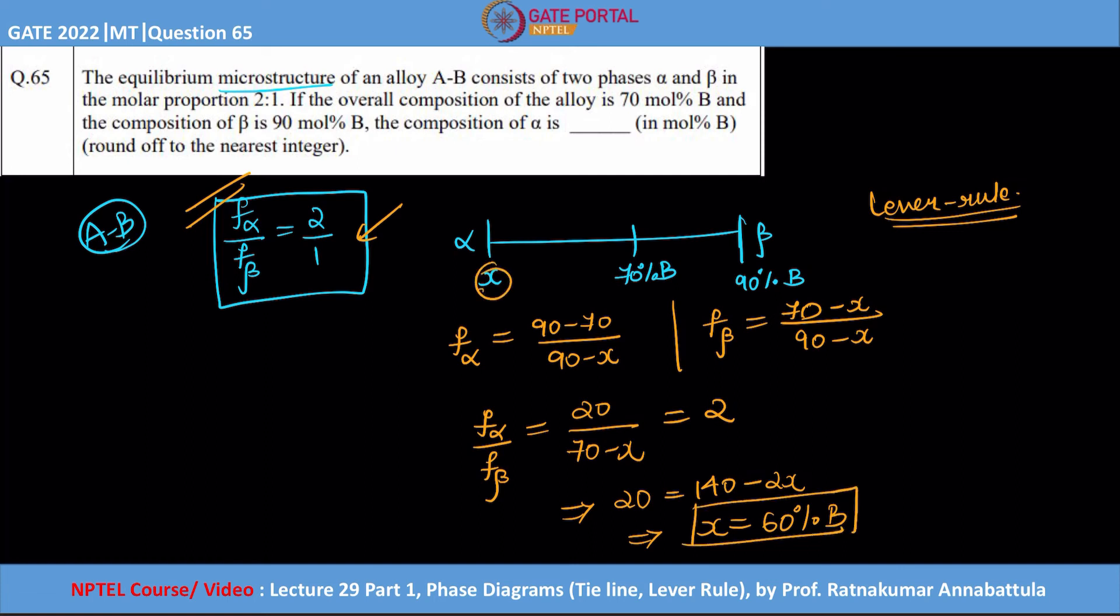This value is 60. What we basically did is we started by assuming that alpha has some x percentage of B in it, and then from the given relation we tried to correlate F_alpha and F_beta and calculated our assumed value of x. This is basically done with the help of the lever rule. That's it for this question. I hope this is clear. Thank you for watching.